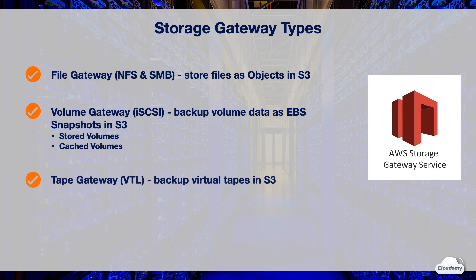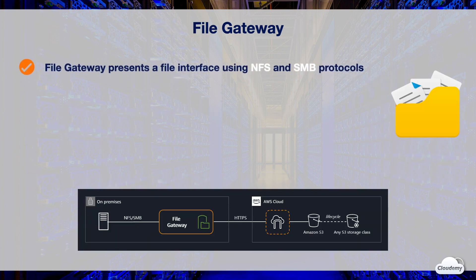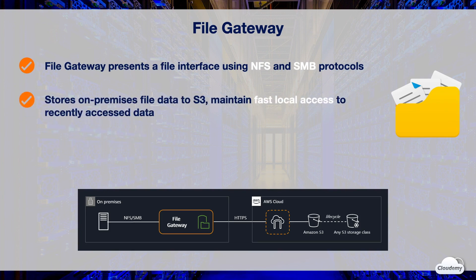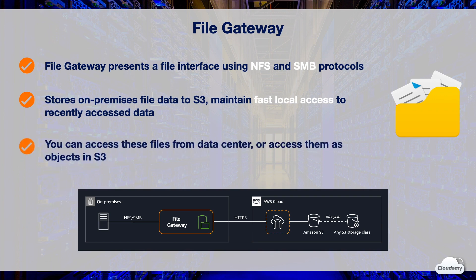If you have an existing tape system, you can use Tape Gateway to leverage existing tape applications and workflows and back up virtual tapes in S3. File Gateway presents a file interface using NFS and SMB file protocols. With File Gateway, you can store files as objects in S3. Customers use File Gateway to migrate on-premises file data to S3 while maintaining fast local access to recently accessed data. You can access these files via NFS and SMB from the data center or directly as objects in S3. File Gateway also lets you leverage S3 features such as lifecycle management and S3 replication for hybrid cloud workflows, and enables easy access to data generated by on-premises applications for processing by AWS services such as machine learning or big data analytics.